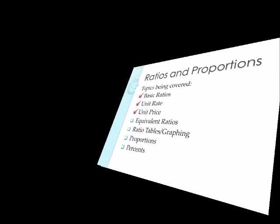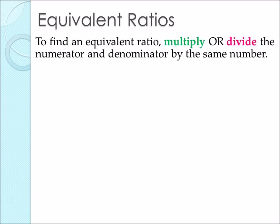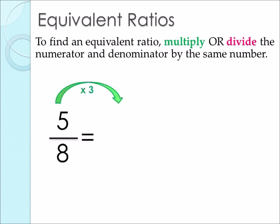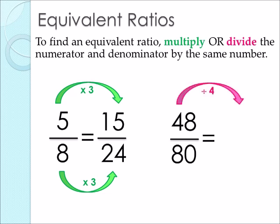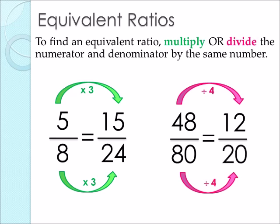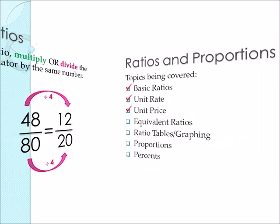Our next topic is equivalent ratios. To find an equivalent ratio, multiply or divide the numerator and denominator by the same number. We have 5 eighths. To make an equivalent ratio, we multiply both parts by 3: 5 times 3 gives us 15, and 8 times 3 gives us 24, so 15 over 24. Likewise, we can also divide. Here we have 48 over 80. We divide both numbers by 4: 48 divided by 4 gives us 12, and 80 divided by 4 gives us 20, giving us another equivalent ratio: 12 over 20.